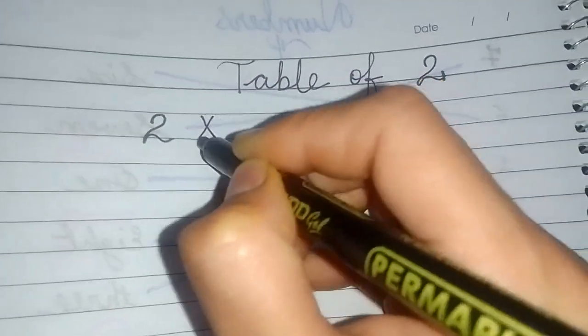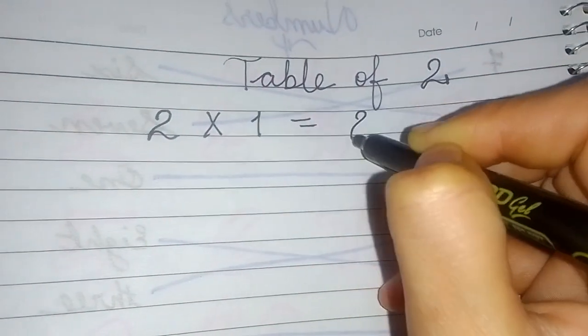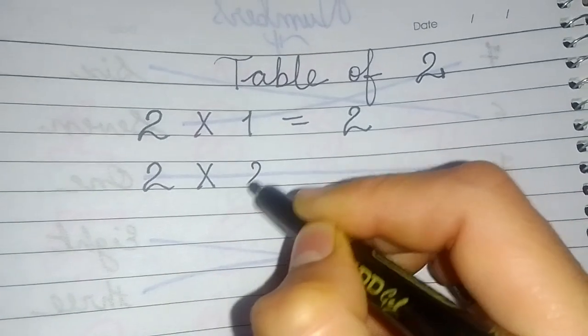Repeat with me. 2 ones are 2. 2 twos are 4.